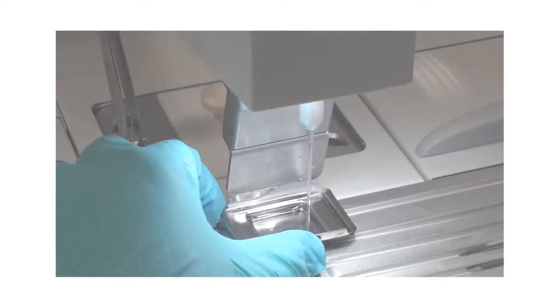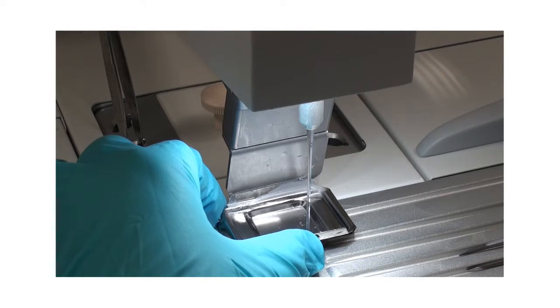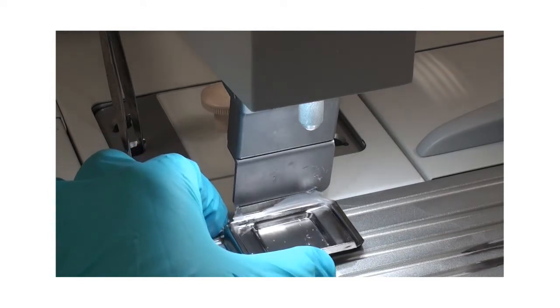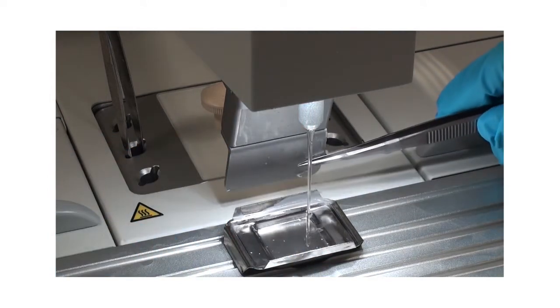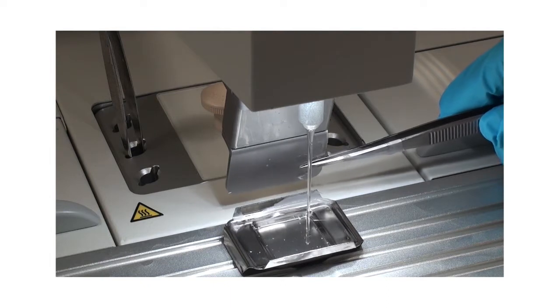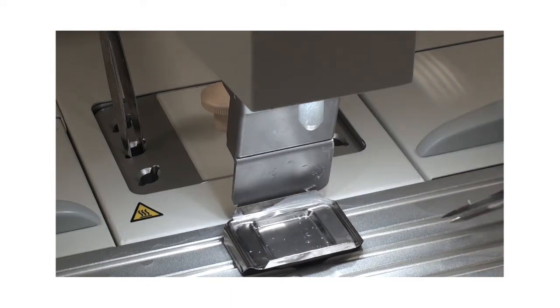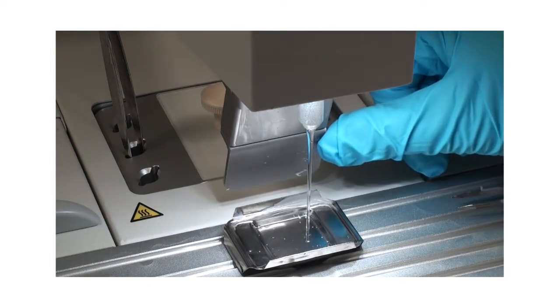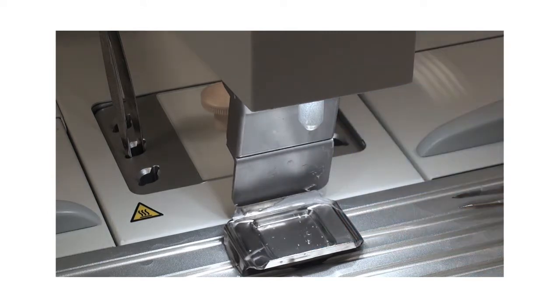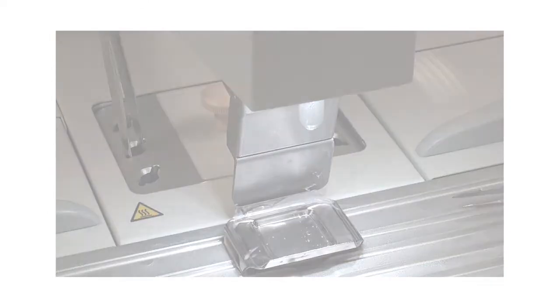When using standard cassettes and or molds, simply push the mold with your forceps, or your finger, against the pressure clip. Pushing the handle backwards will open the dispenser valve. Once released, the handle flips back in the original position and the valve closes.